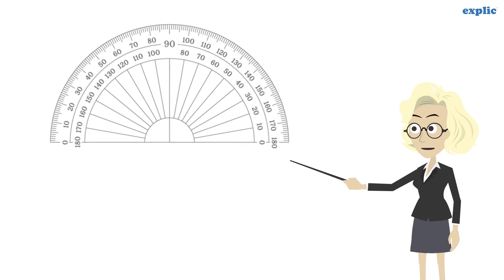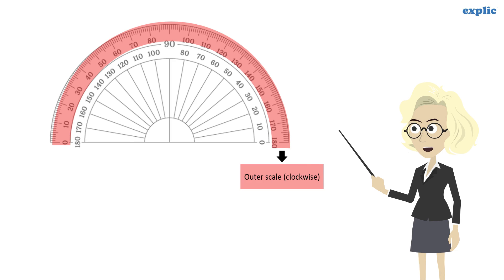A protractor has two scales. The outer scale measures the clockwise angle, and the inner scale measures the anticlockwise angle.